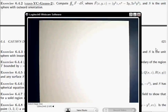Okay, so for Gauss 2, we're computing flux, we've got a vector field, and we've got a sphere.